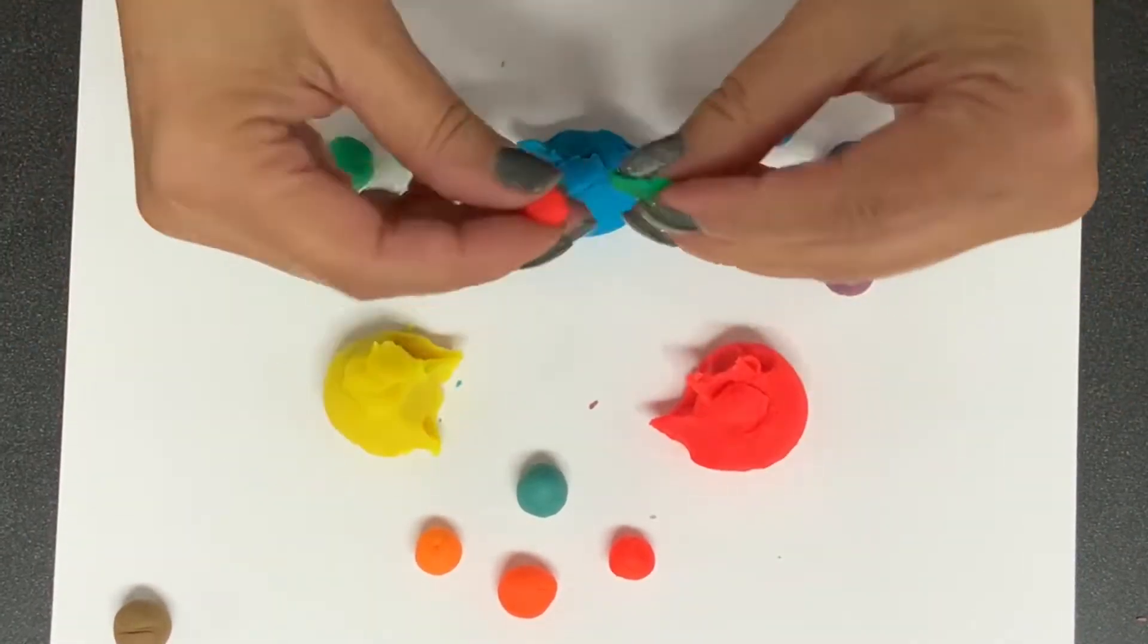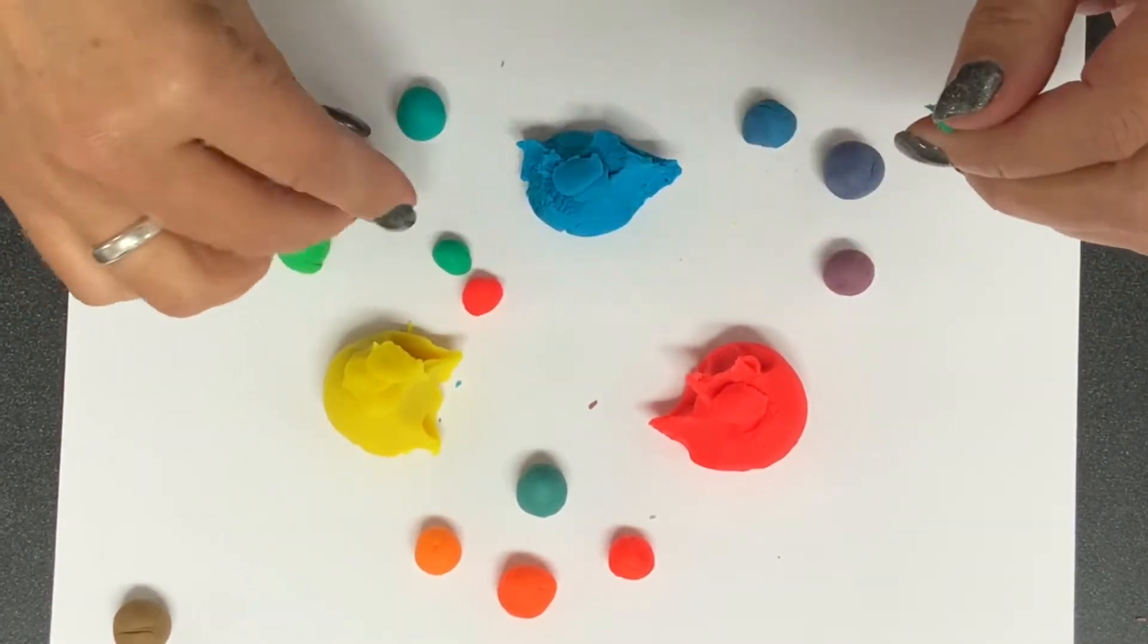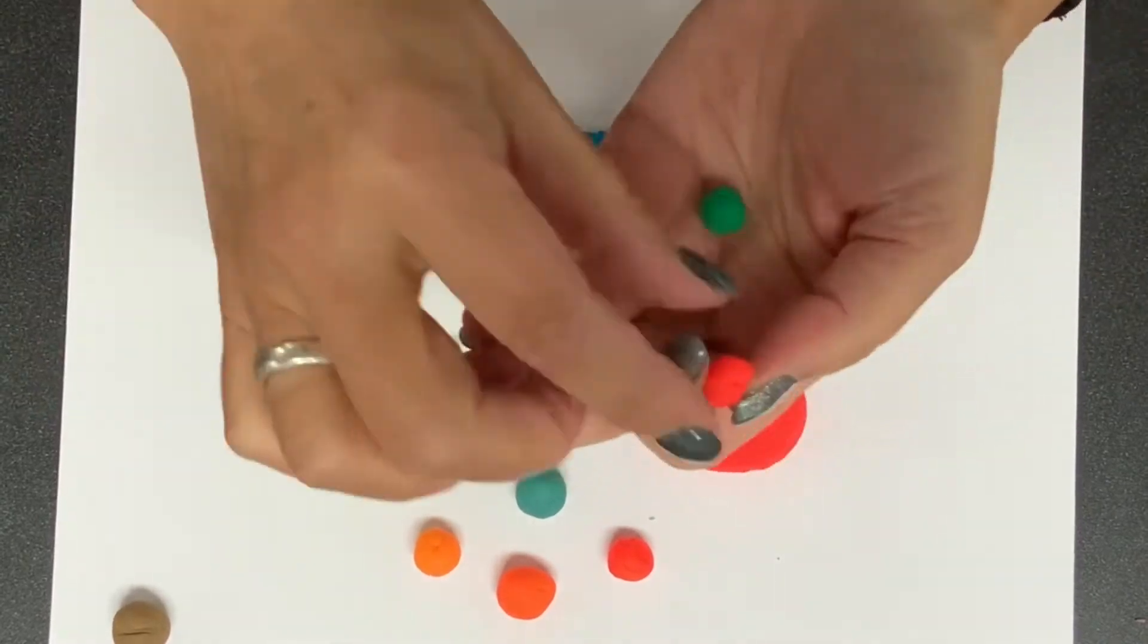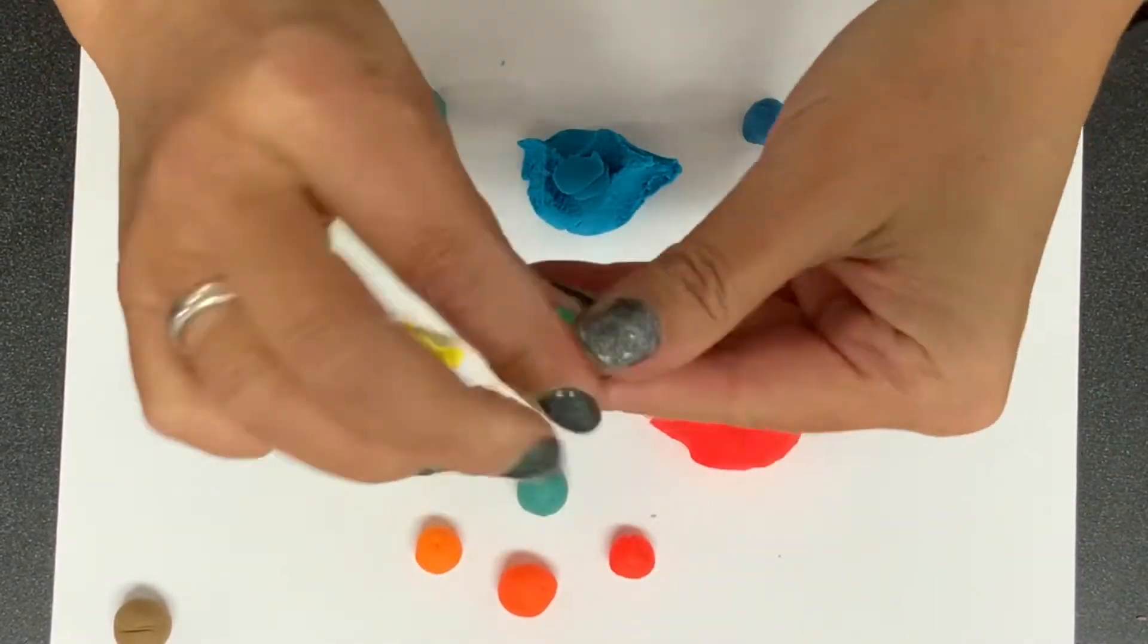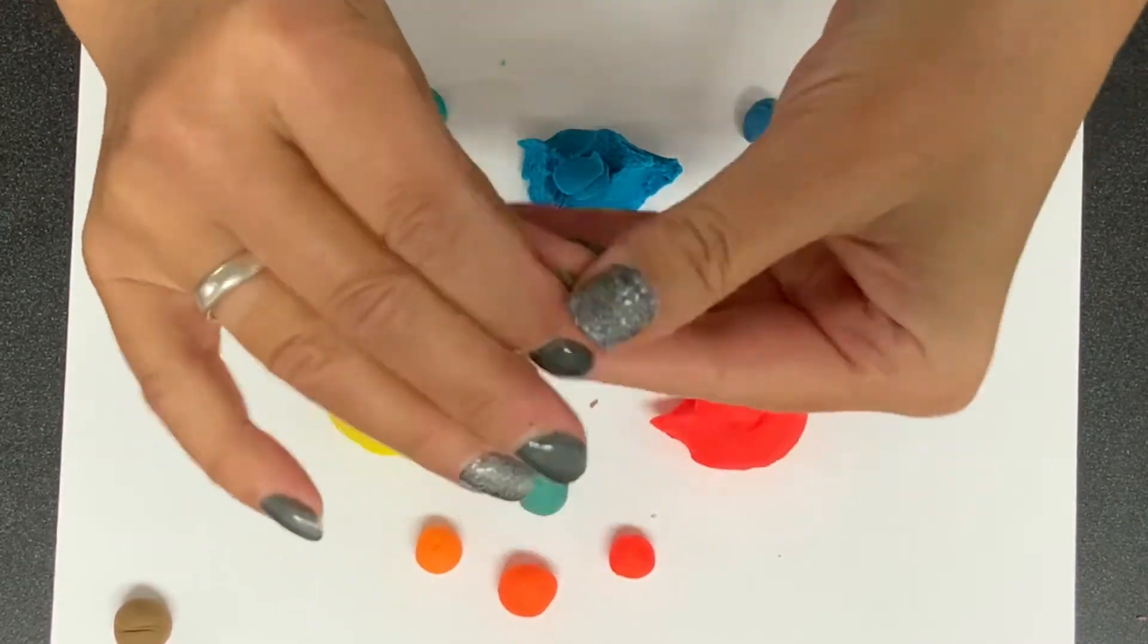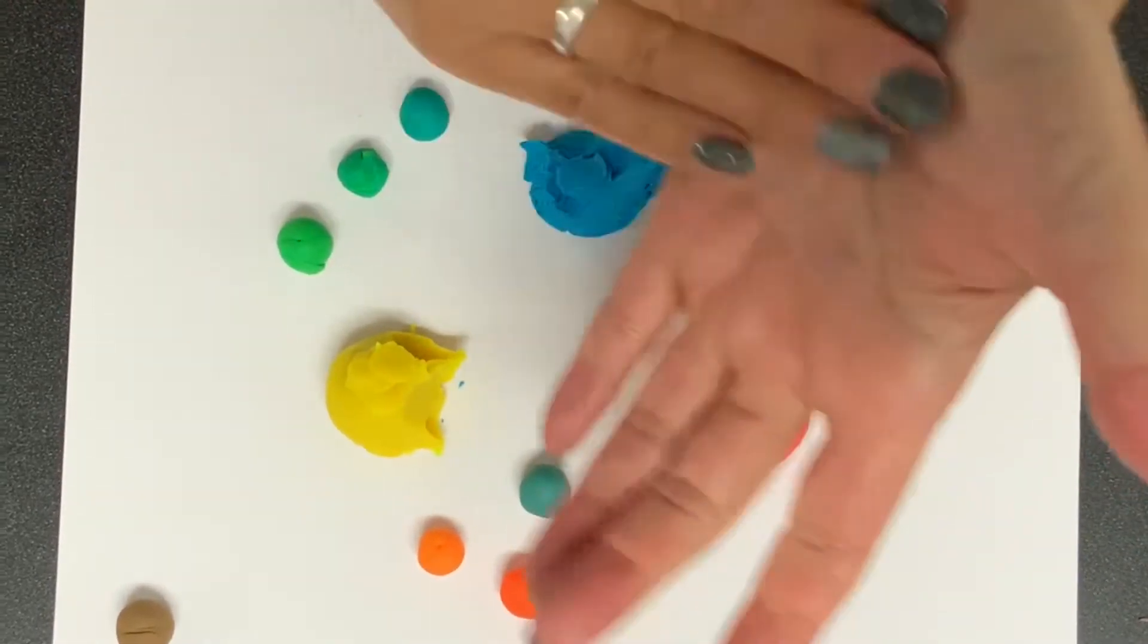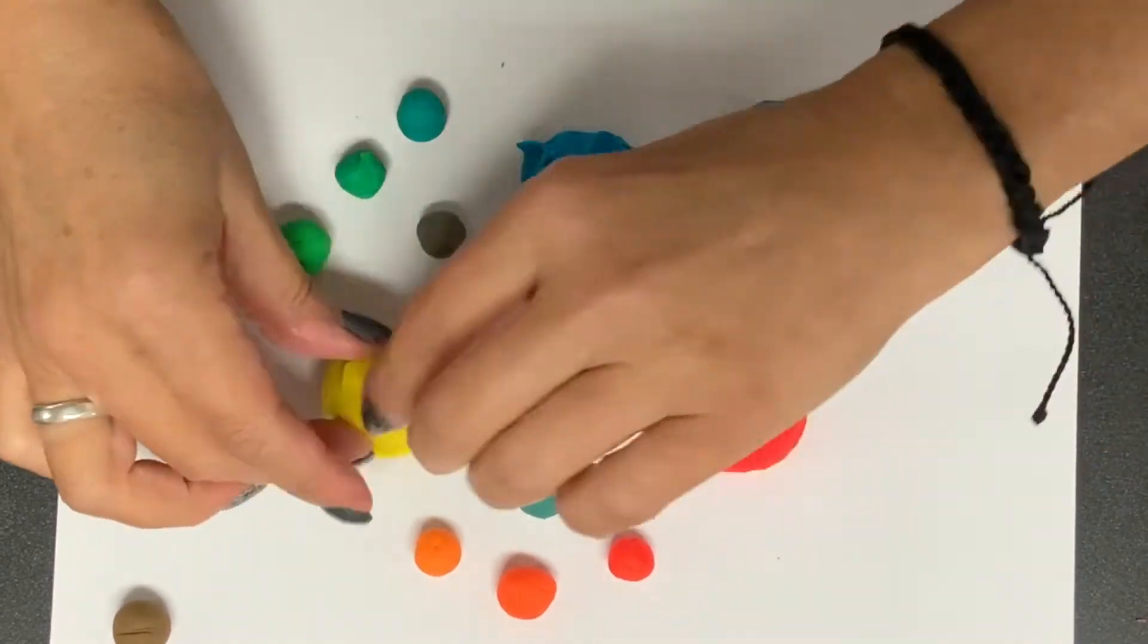Now you're gonna take a pea-sized amount of your red and a pea-sized amount of your green. Again, red and green are complementary colors. So you're gonna squish those together to see what happens. Excellent. There's our neutralized red.